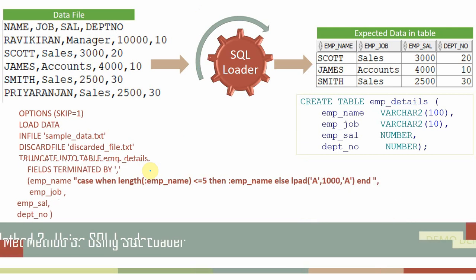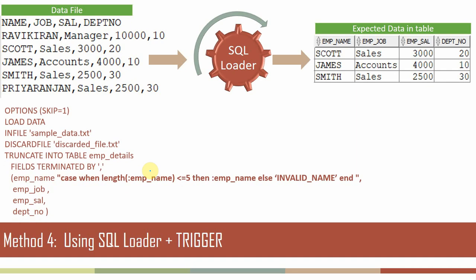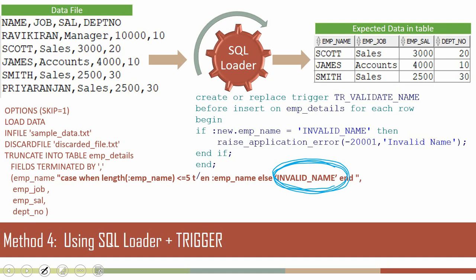There is one more method combining the control file with a database trigger. In the control file, if the length is greater than five, the name is replaced with the string 'invalid name'. A row-level BEFORE INSERT trigger on the table checks for this value and raises an exception. One advantage of this method is that you can redirect invalid records to a separate log table or error table within the trigger, allowing valid and invalid records to be handled independently.